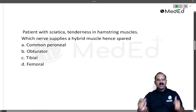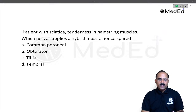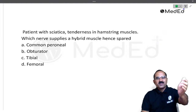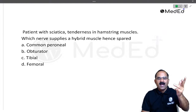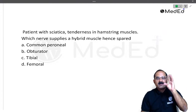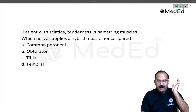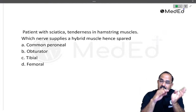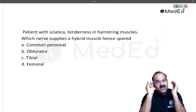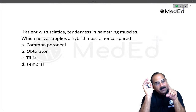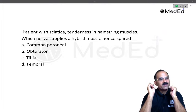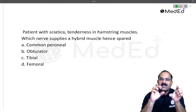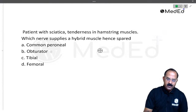The next question: a patient with sciatica has tenderness in the hamstring muscles. Which nerve supplies a hybrid muscle and is hence spared? In sciatica involving the posterior compartment of the thigh, the hamstrings — semitendinosus, semimembranosus, biceps femoris, and adductor magnus — are involved. All of them are supplied by the tibial part of the sciatic nerve, except adductor magnus which has a dual nerve supply. The long head of biceps femoris is supplied by the tibial part and the short head by the common peroneal part of the sciatic nerve. Since the sciatic nerve is involved, the complete biceps femoris is gone. Adductor magnus has dual supply: the hamstring part by the tibial part of the sciatic nerve, and the adductor part by the posterior division of the obturator nerve. So the answer is the obturator nerve.